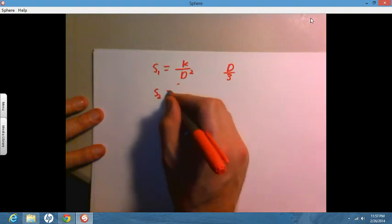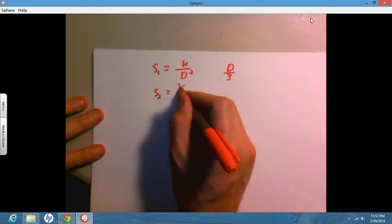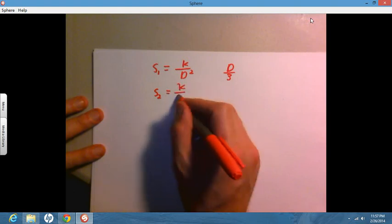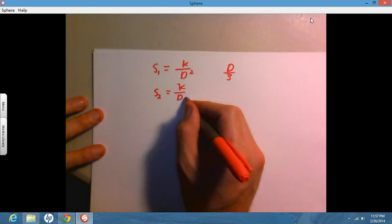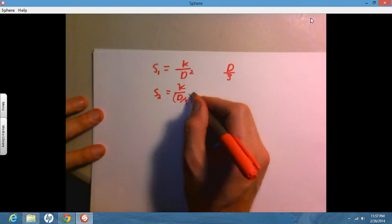So S2 is K divided by, not D squared, but D over three squared. Instead of D squared, it's D divided by three, squared.